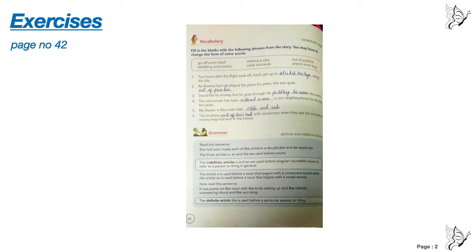Number six, the brother went off theirs head. What is in the help box? Go off one's head. Now, brothers are plural. Yes, the brothers went off theirs. T-H-E-I-R apostrophe S went off theirs' head with excitement when they saw the amount of money they had won in the lottery.